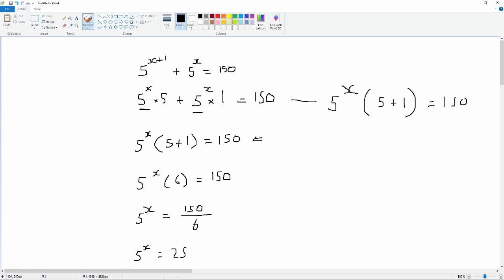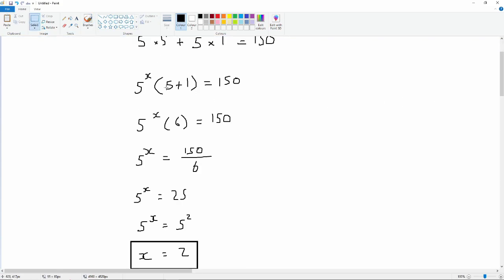So, that's what we've got here. So, this is the factorized version. So, all we're doing now is combining what's in the brackets. So, this is 5 to the power x multiplied by 6 because 5 plus 1 is 6.